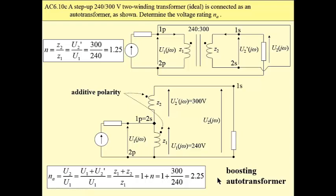Now, let us assume that we have a step-up two-winding transformer. The same voltages, however, different order. Now, from 240 to 300 volt. So we have for this two-winding transformer, we have a turn ratio of 1.25. For additive polarity, like presented above, we have a boosting auto-transformer. Its turn ratio N sub A is 2.25.